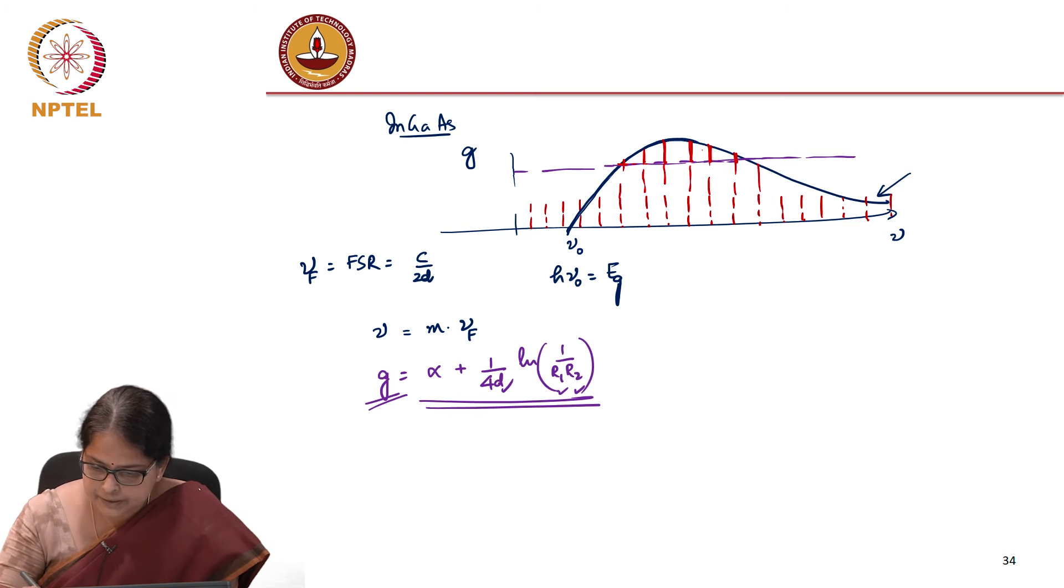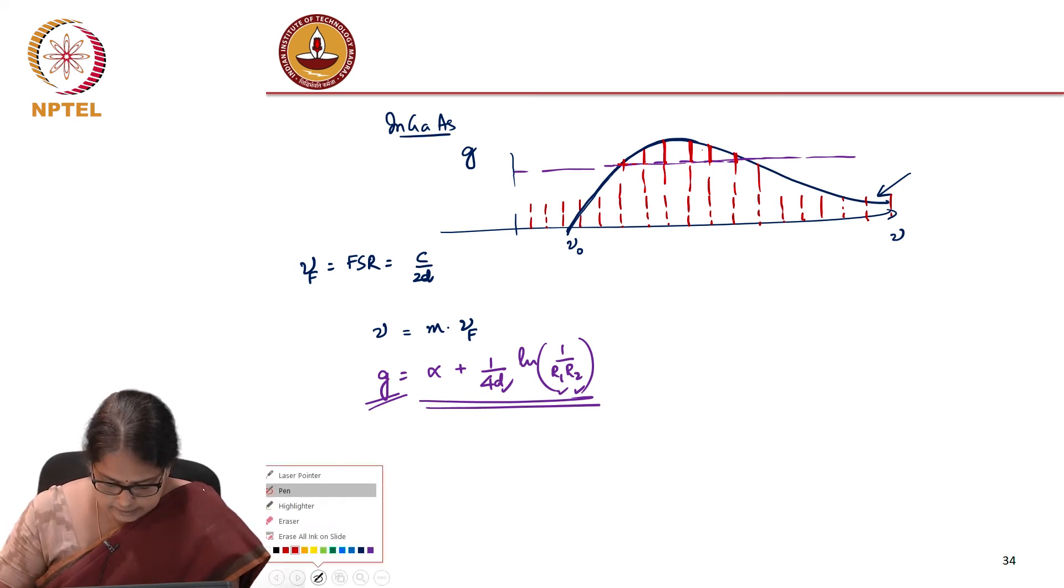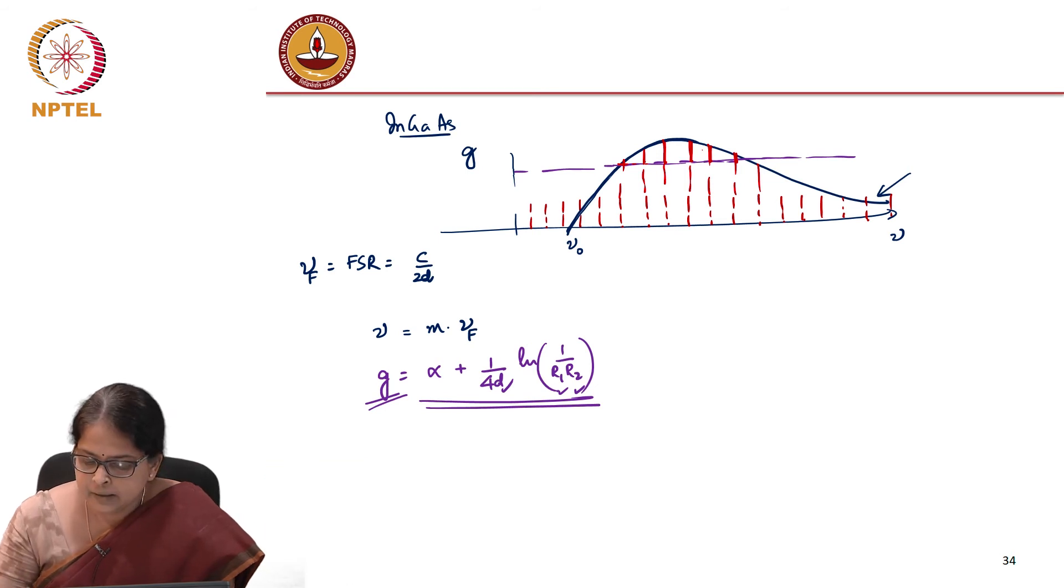So the output spectrum of this particular laser is going to look somewhat like this. It is just a representative picture. The output spectrum is going to look like this. You have larger power here, corresponding to... you do not have this frequency supported. This frequency of course, you have the largest power corresponding to these two frequencies. It somewhat looks like this. And here again the gain has fallen.